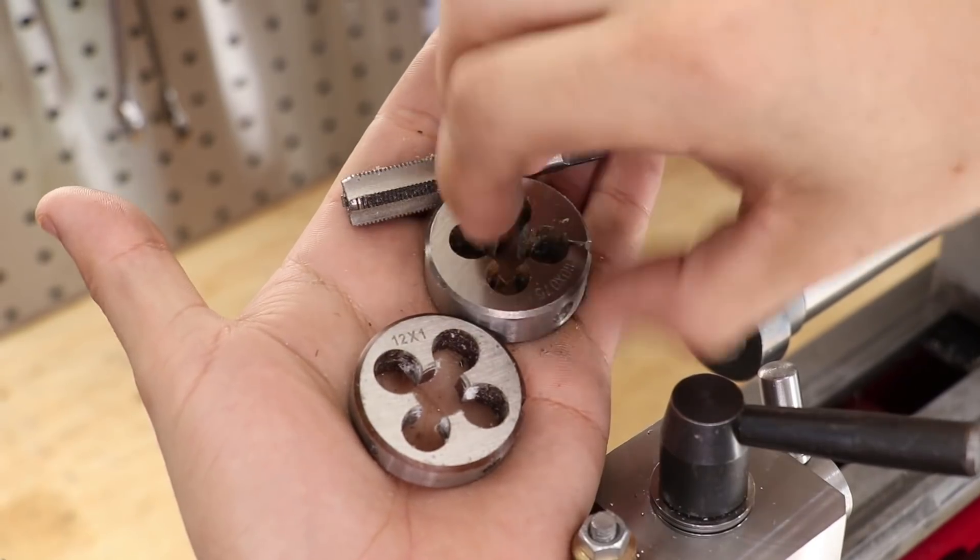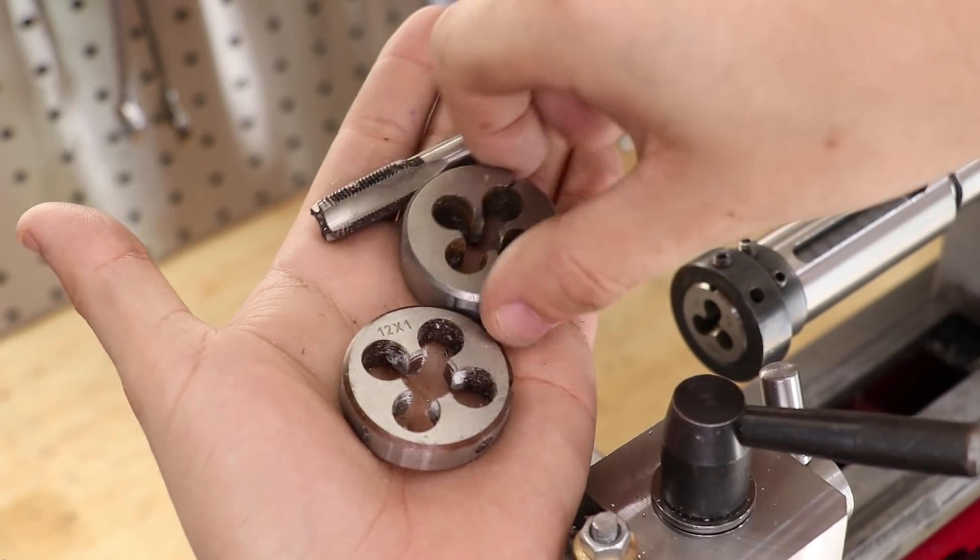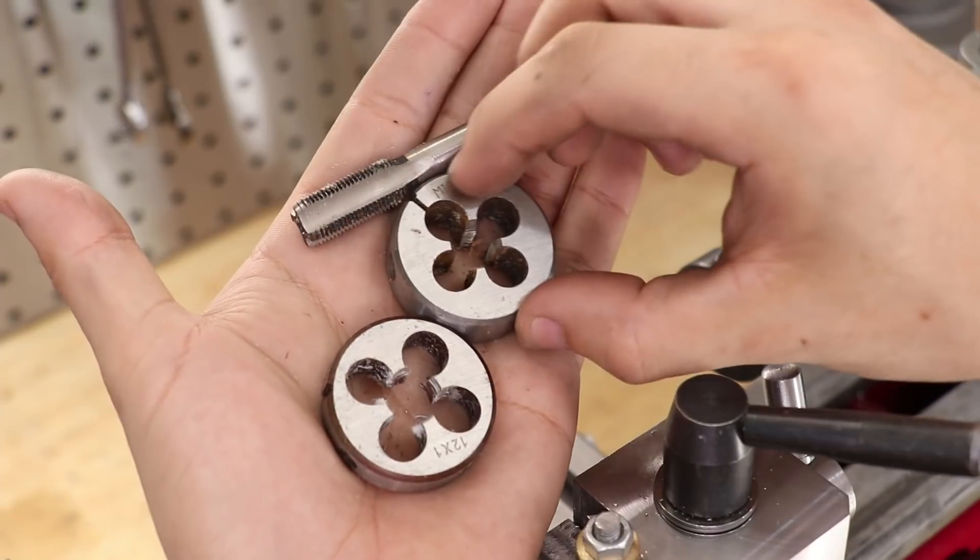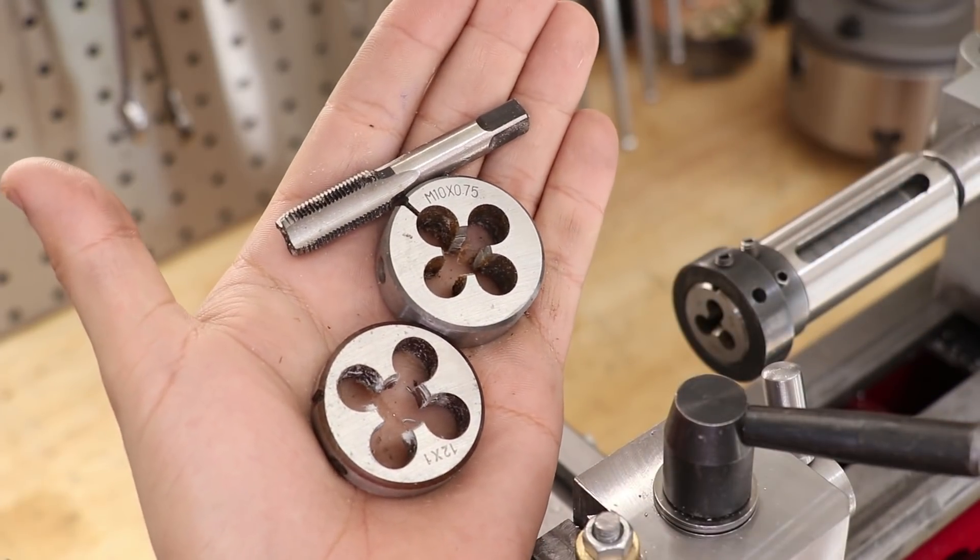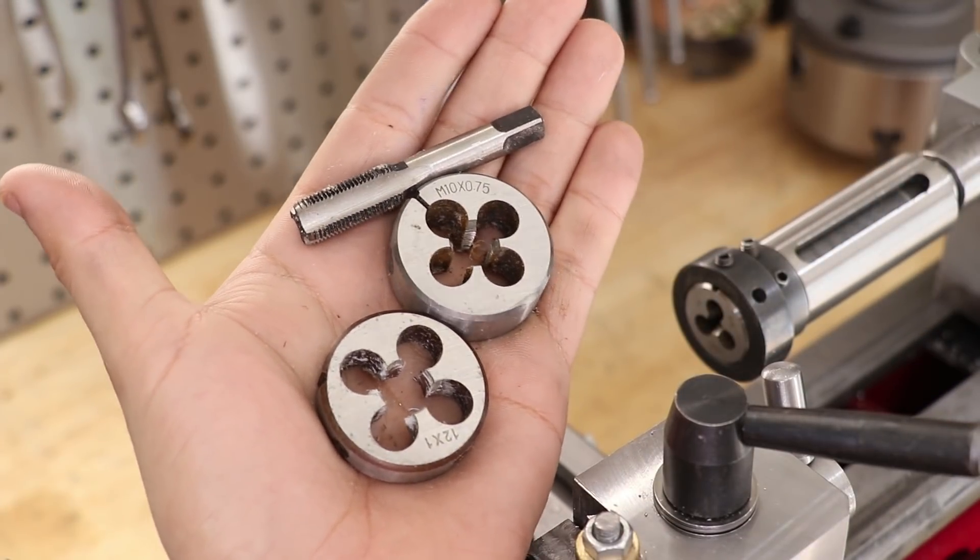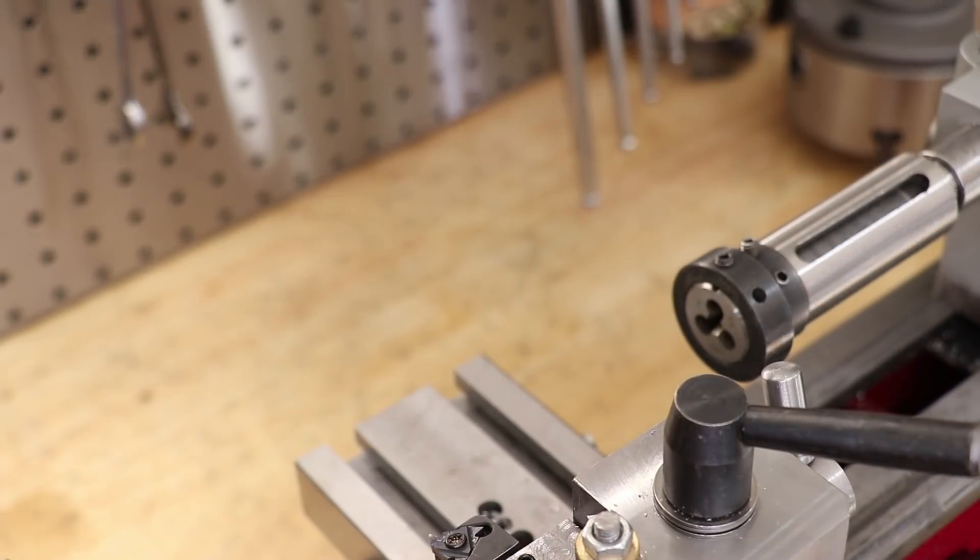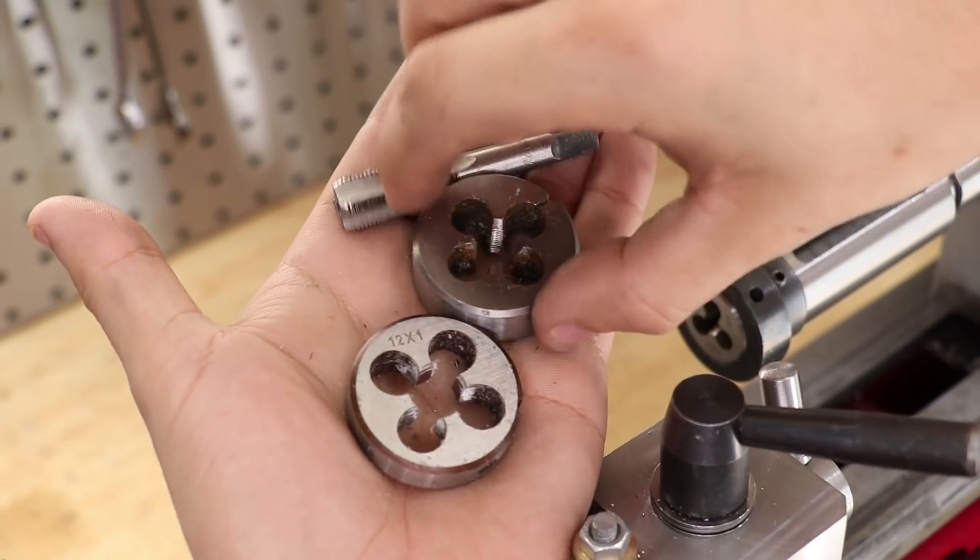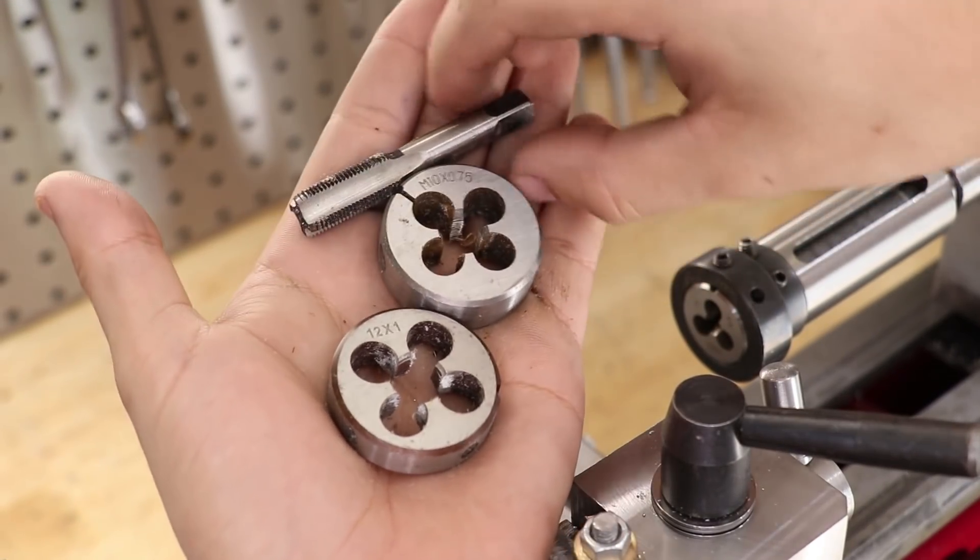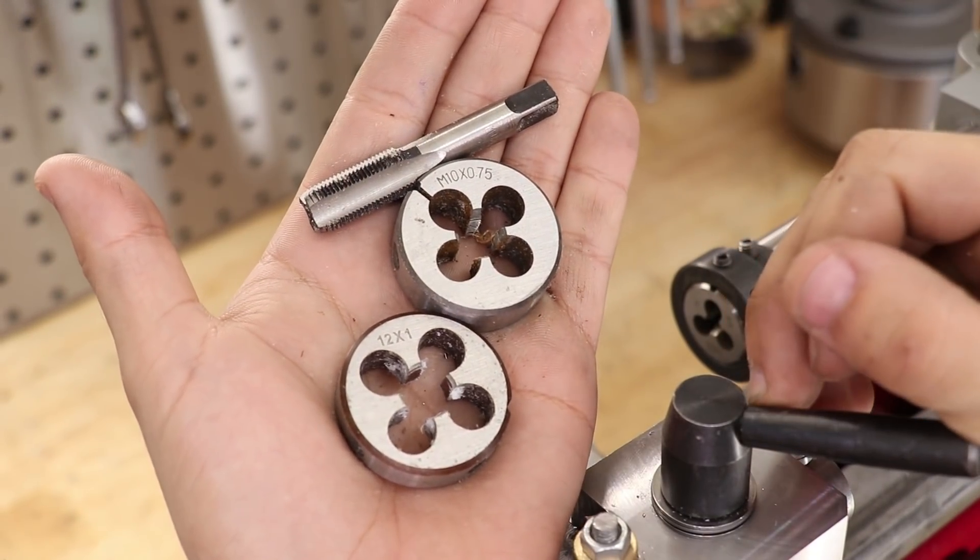I do have the odd non-standard die. This one's M12x1 and M10x0.75. Technically, these are fine pitch metric, but they aren't that common. I bought these because I needed to cut a lot in these threads, so it was just a lot easier for me to buy these dies.